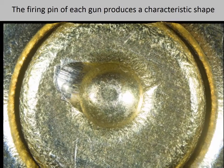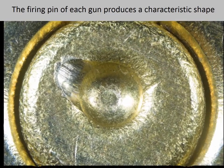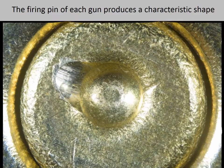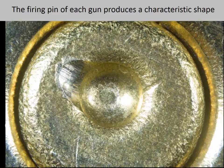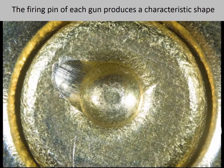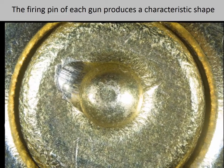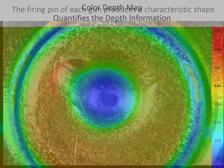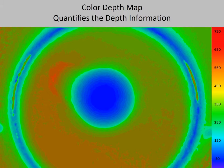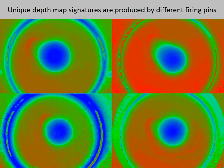Here is a three-dimensional video of the firing pin impression made using a different gun. Each firing pin of each gun produces a characteristic shape. Here is the color depth map that corresponds to this particular firing pin. Here are the depth maps produced by the firing pins of four different guns, and we can see that each firing pin produces a unique depth map signature.